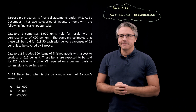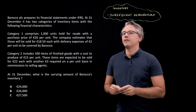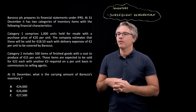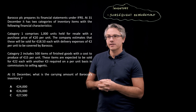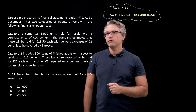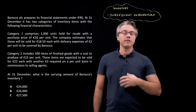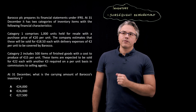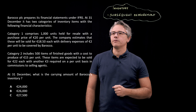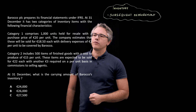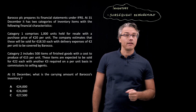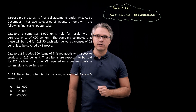This is the question I want us to have a go at. Baraco PLC prepares its financial statements under IFRS. At the 31st of December, it has two categories of inventory items. Category 1 comprises 1,000 units held for resale with a purchase price of 20 per unit. The company estimates these will be sold for 18.50 euro each, with delivery expenses of 2 euro per unit to be covered by Baraco. Category 2 includes 500 items of finished goods, with a cost to produce of 15 euro per unit. These items are expected to be sold for 22 each, with another 3 euro per unit in commissions to selling agents. At the 31st of December, what is the carrying amount of Baraco's inventory?